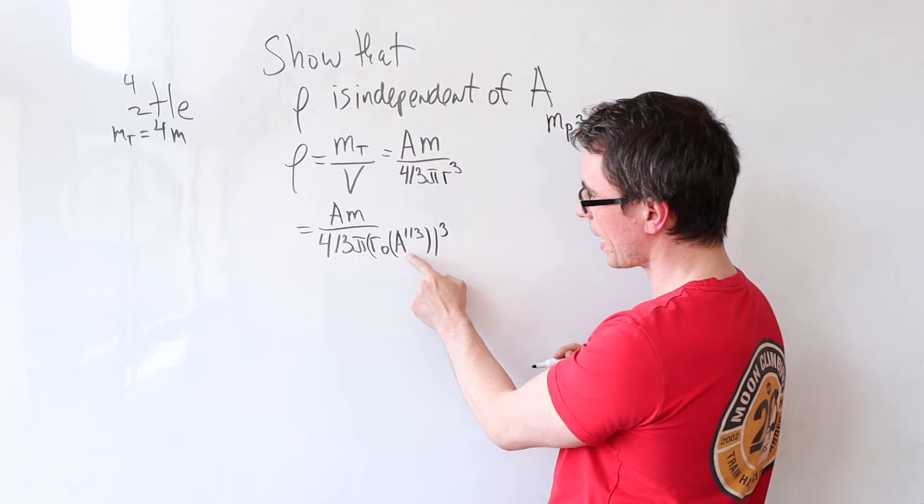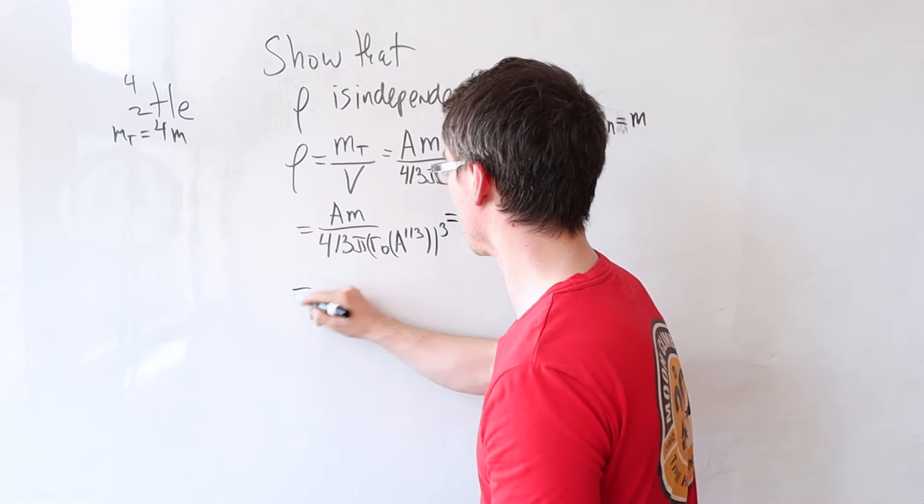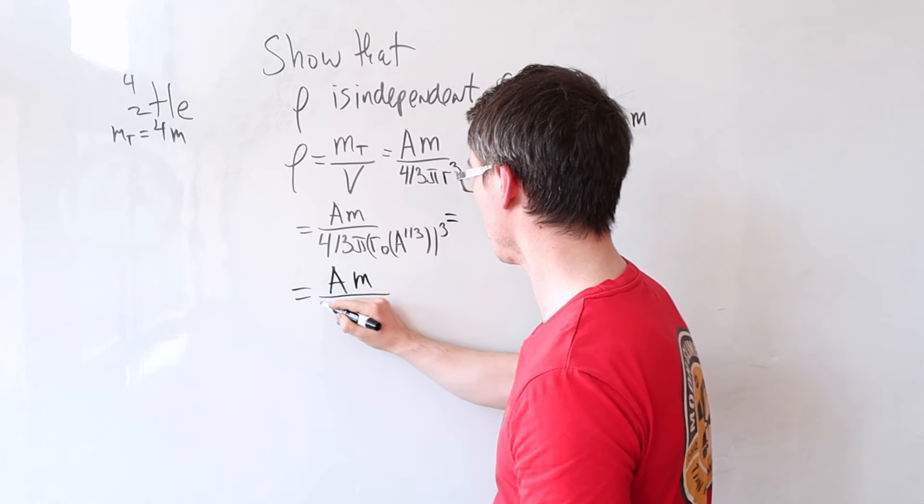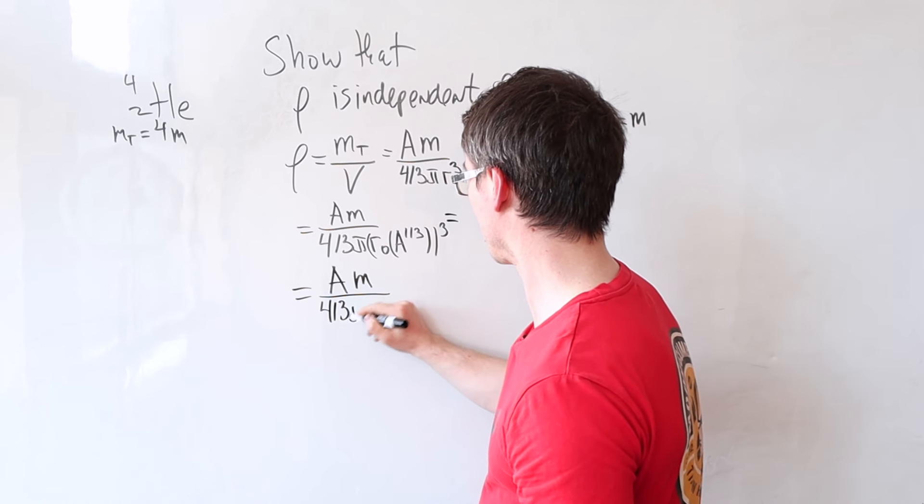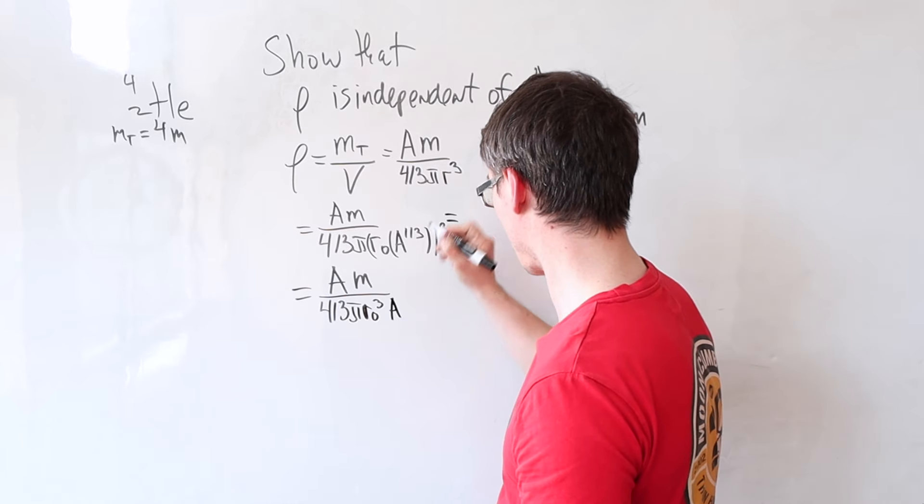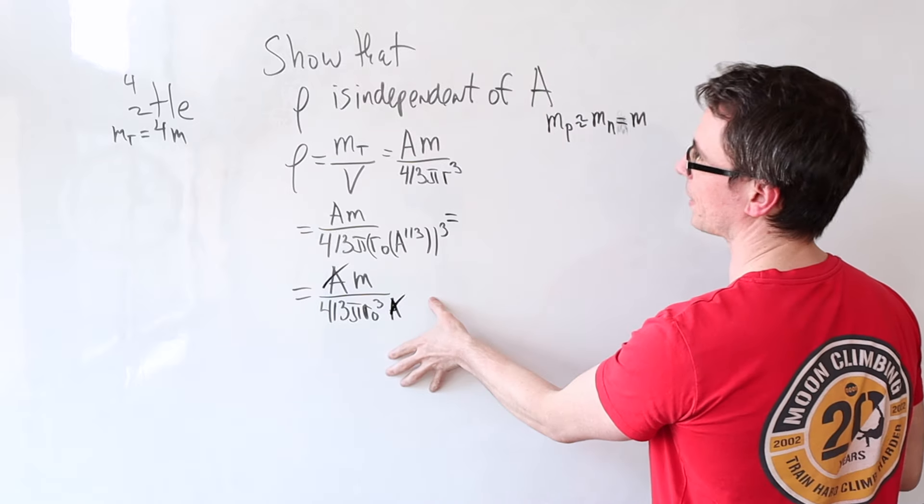But hang on a minute, look at this: A^(1/3) cubed will end up canceling. So my final step will just be to show the actual cancellation: r₀³ A^1, and this here will end up canceling out.